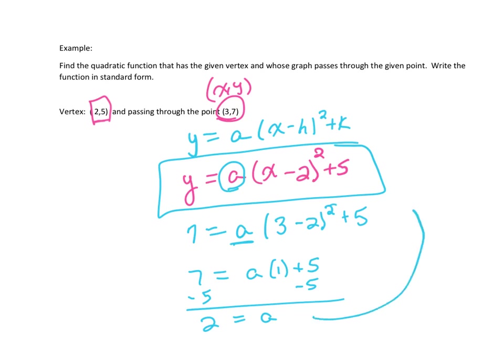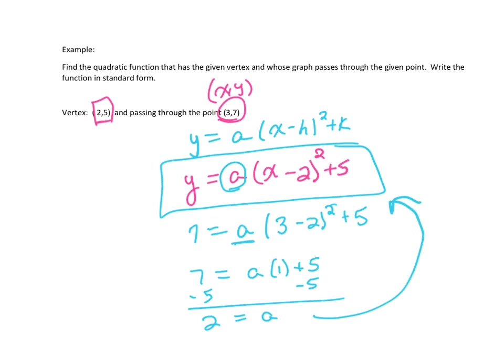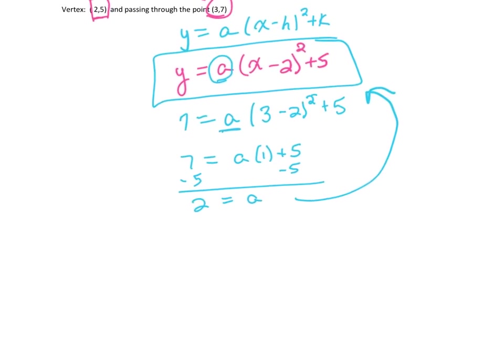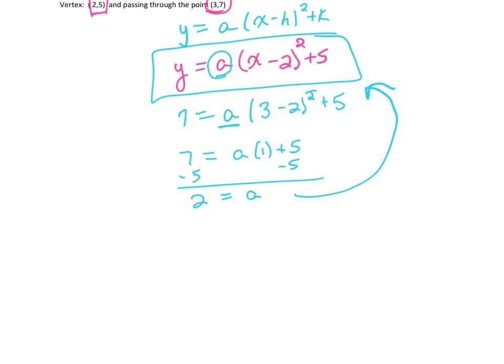So now we can go back and we can take that value and plug back into the equation that we know we've got based on the vertex that we were given. So y = a, well we know our a value now is two, times (x - 2)² + 5.